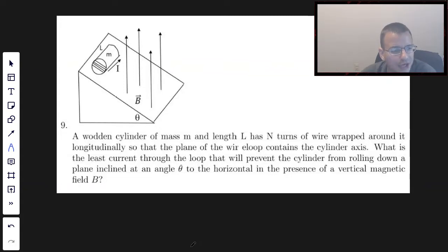A wooden cylinder of mass m and length L has N turns of wire wrapped around it longitudinally so that the plane of the wire loop contains the cylinder axis.